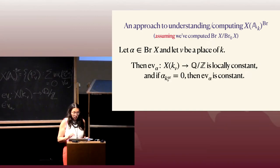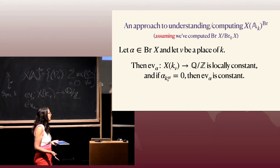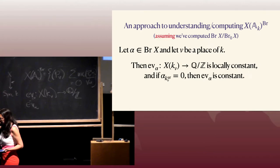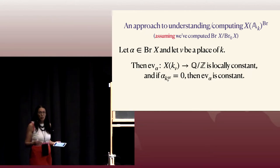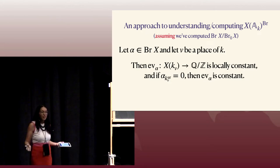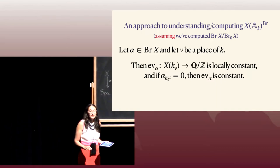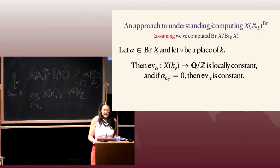We know a bit more: if your Brauer class is killed by an unramified extension of your local field, then you know the evaluation is always zero. This is very useful for elements in Br¹ — everything in Br¹ is going to be killed by some finite extension, which is unramified away from a finite set of primes. So immediately, for all of those places, the class is zero. That's a huge bonus.